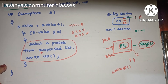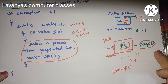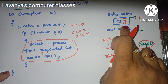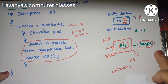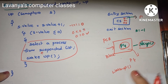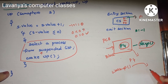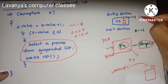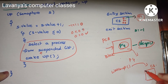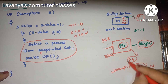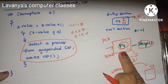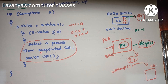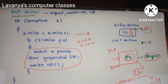A process in sleep state cannot be directly placed in active mode. First it goes to sleep state, then after wake up, it is kept in the critical section. Once P1 exits, P4 comes out of the PCB and is placed in the wake up state — this is how the critical section works with semaphores.